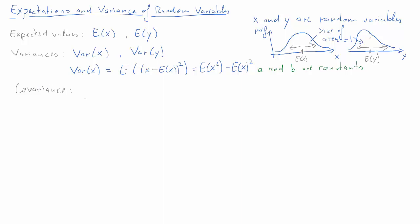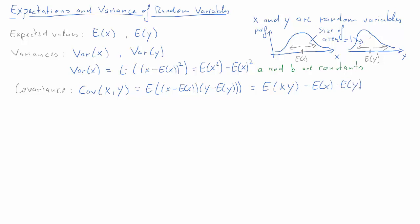Before we continue, we also need to mention the covariance. The covariance is a measure of how the two random variables x and y move together. It is defined as the expected value of (x minus the expected value of x) times (y minus the expected value of y). There is an alternative specification: the covariance of x and y is also equal to the expected value of x times y, minus the expected value of x times the expected value of y. You can use simple algebra to get from one expression to the other.